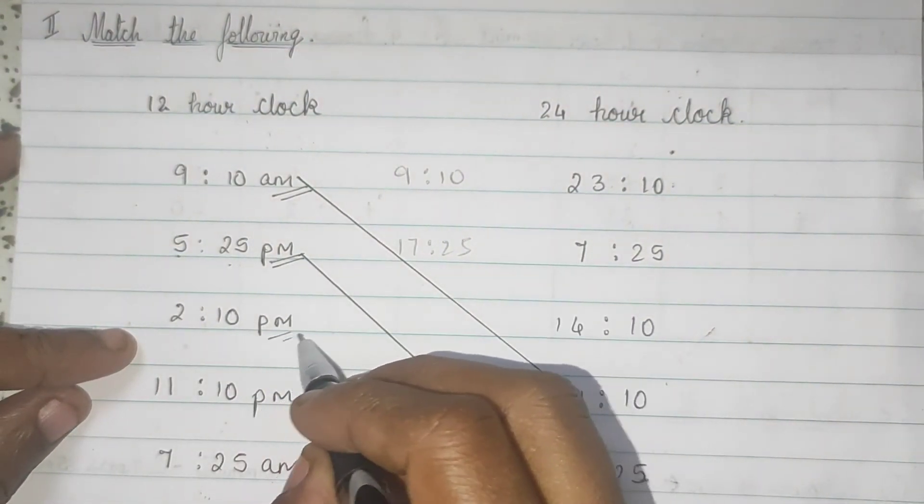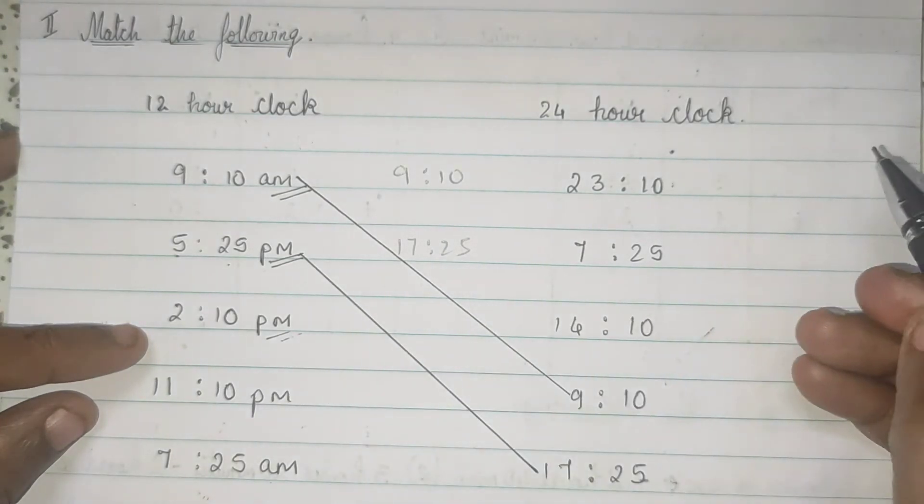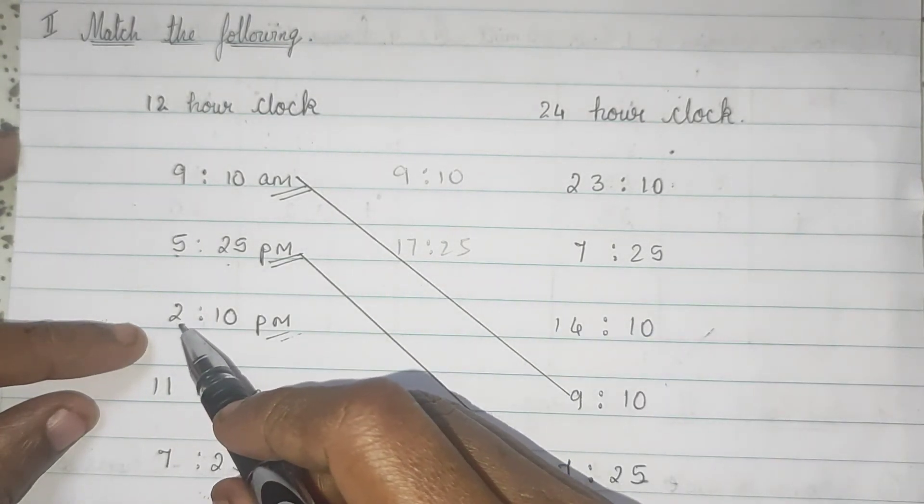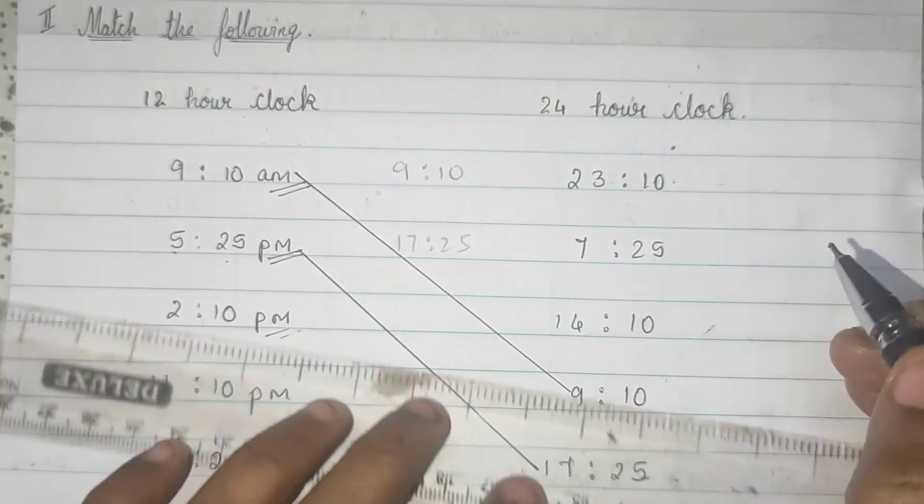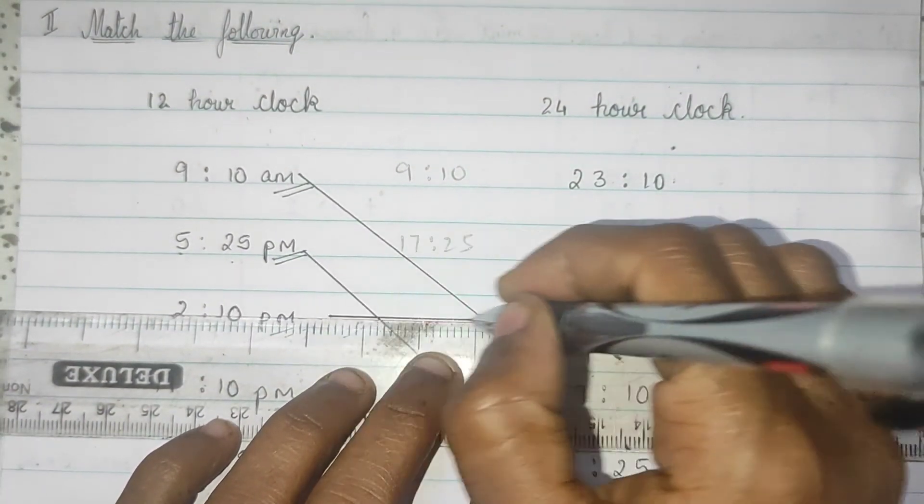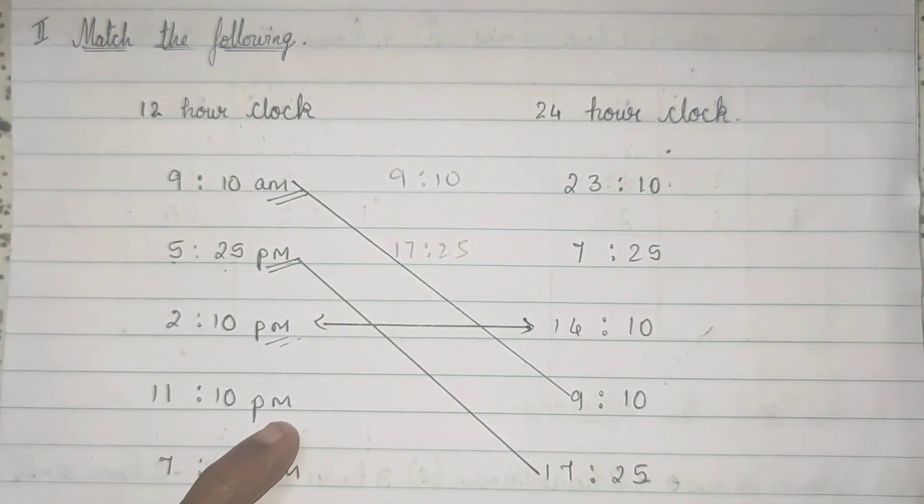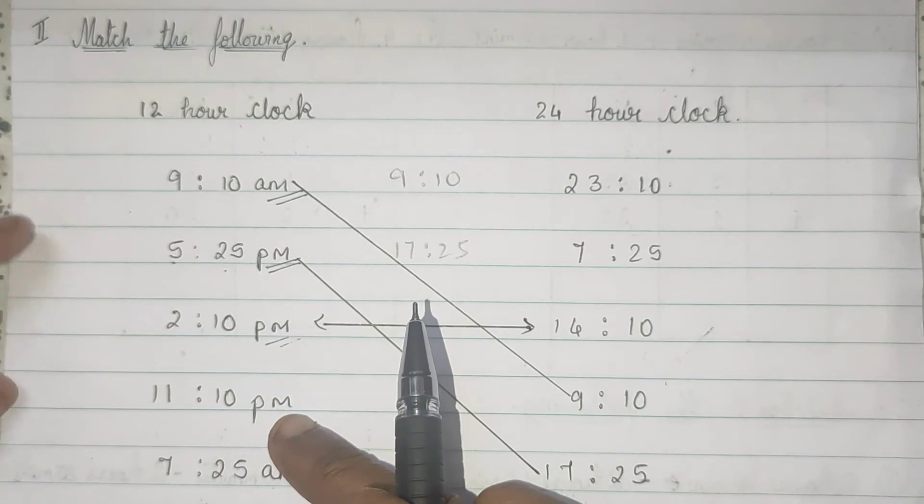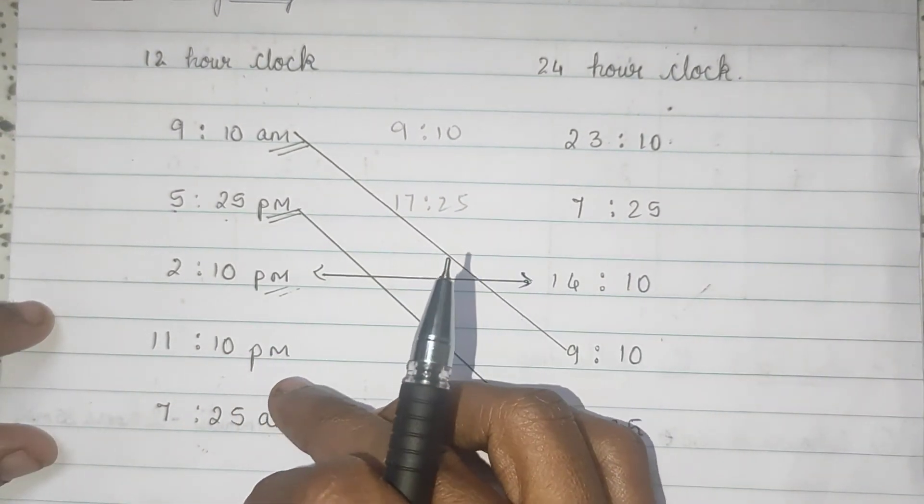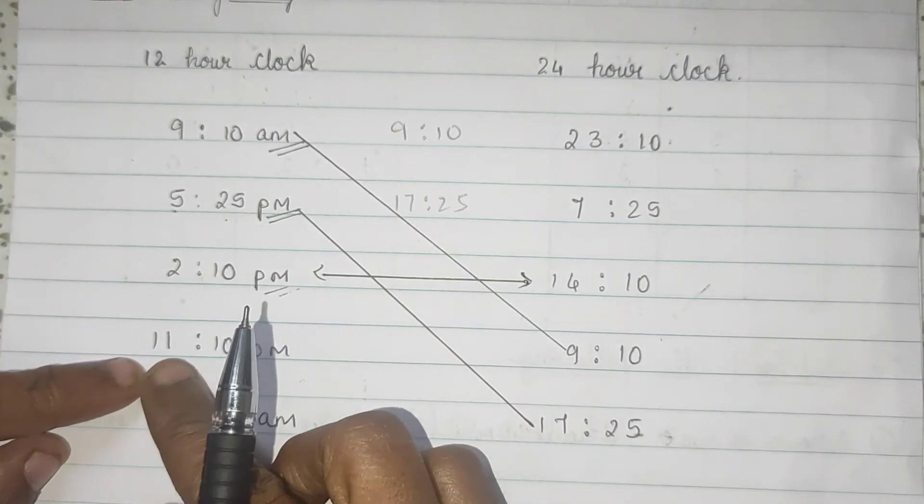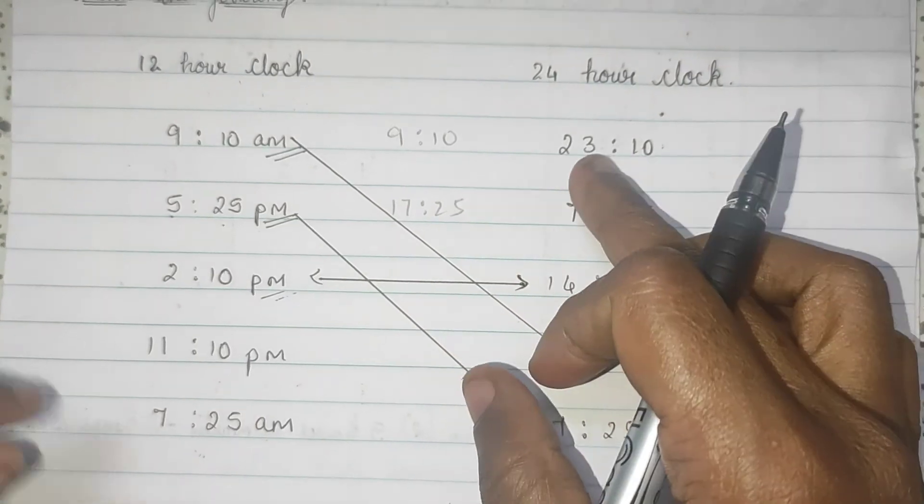2, 10 p.m. Again, p.m. P.m. means afternoon. So, 12 plus 11 is equal to 23. So, here.